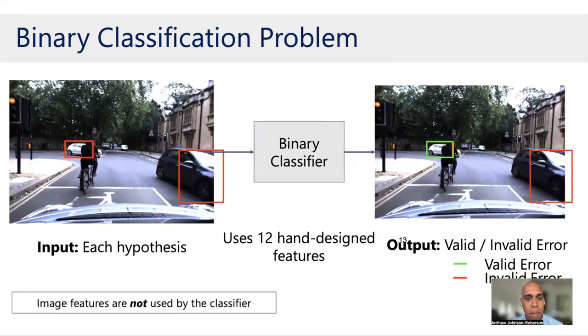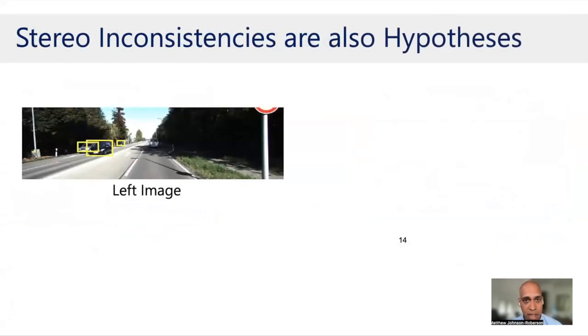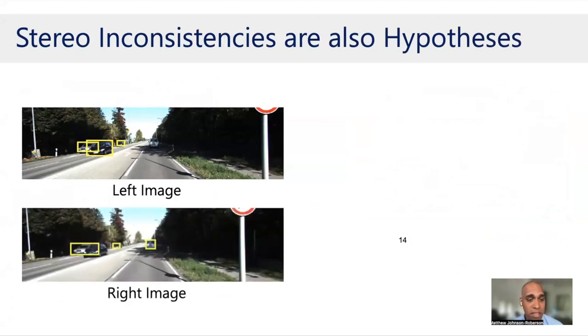So what that means is if I get a single shot detector, and then my tracking tells me that it propagates to the next frame, but my single shot detector fails to detect it in that new frame, I know that there's a high likelihood that that is probably something that I missed. And so another way of thinking about this is that temporal inconsistencies are hypotheses for missed detections.